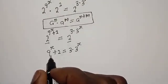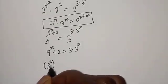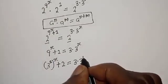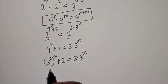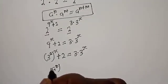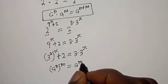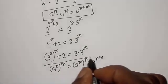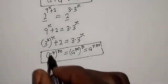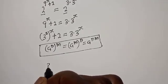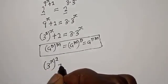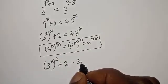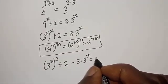Then 9 raised to power s can be written as 3 squared raised to power s, plus 2, is equal to 3 multiplied by 3 raised to power s. Now take note that if you have a raised to power n, to the power of m, this equals a raised to power n times m. So 3 raised to power 2 raised to power s becomes 3 raised to power 2s. Bringing all terms to one side: 3 raised to power 2s plus 2, minus 3 multiplied by 3 raised to power s, is equal to 0.